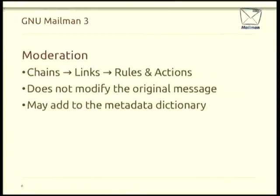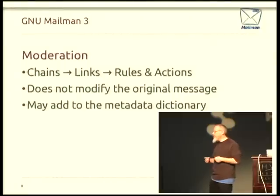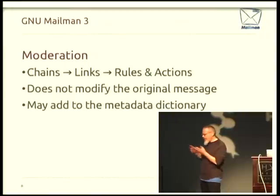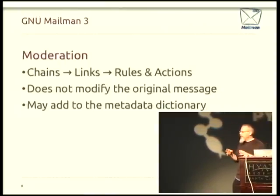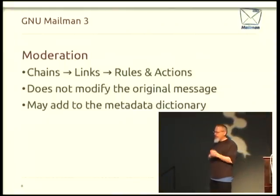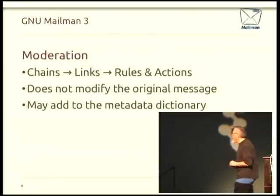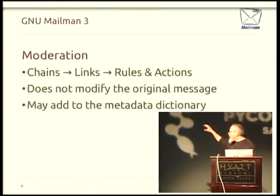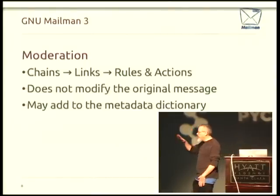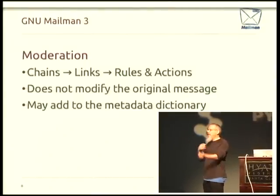One other internal change: in Mailman 2, when it got a message it passed it through a pipeline of handlers linked together, where each handler could do moderation — ask whether the message should get posted — and also do modifications like removing or adding headers. It was a bit unwieldy to merge those two operations into the same pipeline because it was order-dependent and hard to configure. So now we've separated out moderation and modification. The moderation step doesn't modify the original message — it inspects it and builds up state in a dictionary that follows the message through the system. The moderation architecture uses a structure called a chain, which is configurable and made up of links.